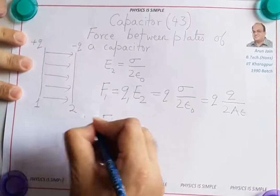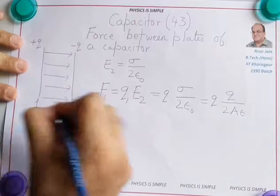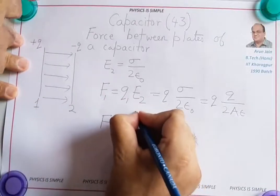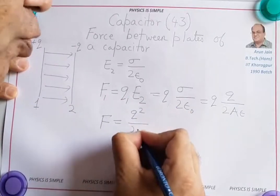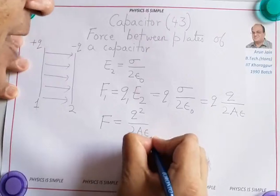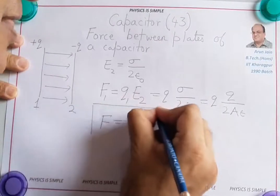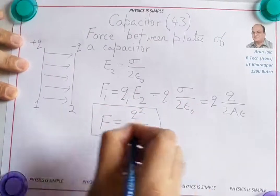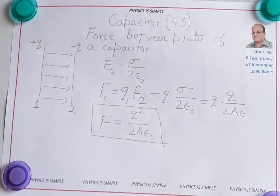So we get this force experienced by plate 1 as Q square by 2A epsilon naught. And this is the force that the other plate will also experience. So therefore the two plates experience equal and opposite force.